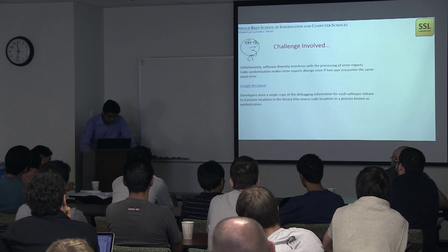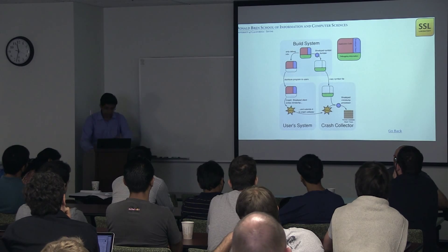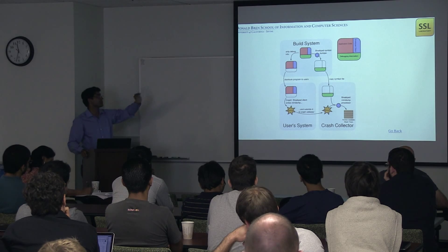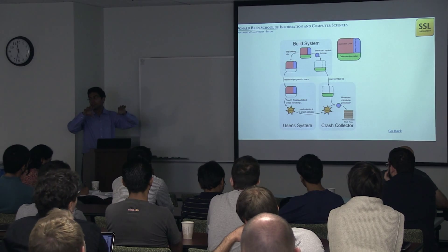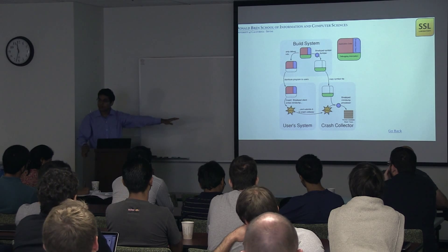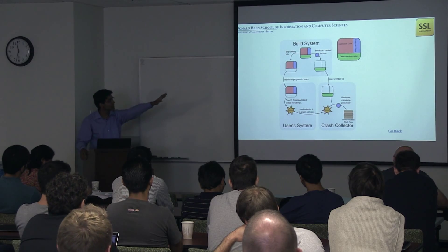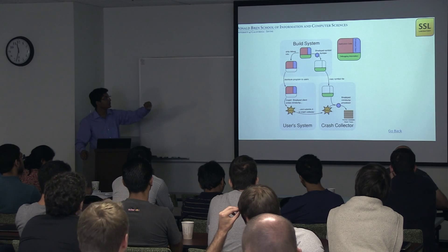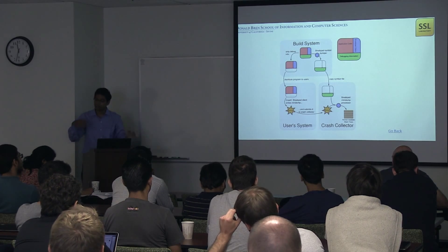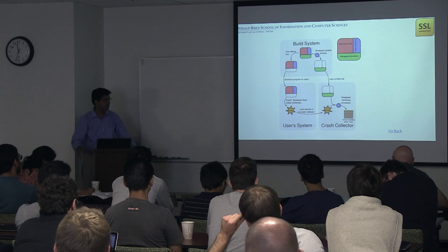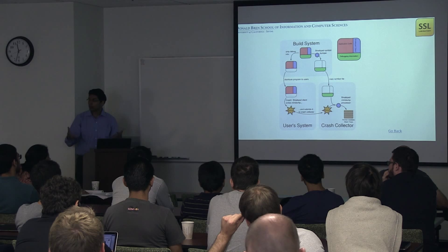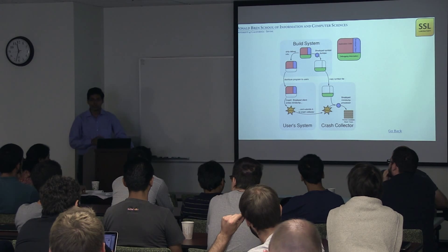This is the Google Breakpad client side. What happens is basically there's a build system. You strip off the debug information and put the rest to the user system. If there's a crash report, it goes and stitches with the debug information. There's minidump and stack walking, and finally you would have a human-readable form for debugging your information.